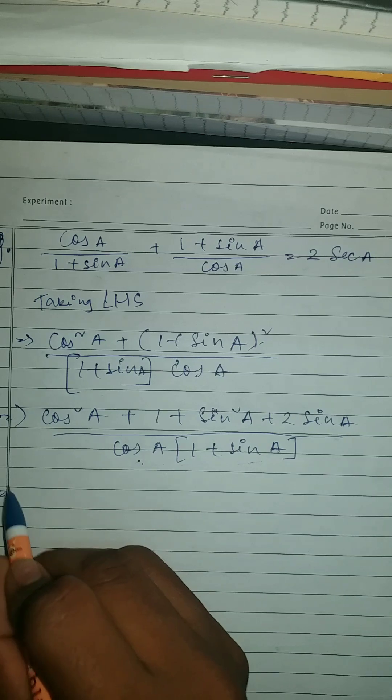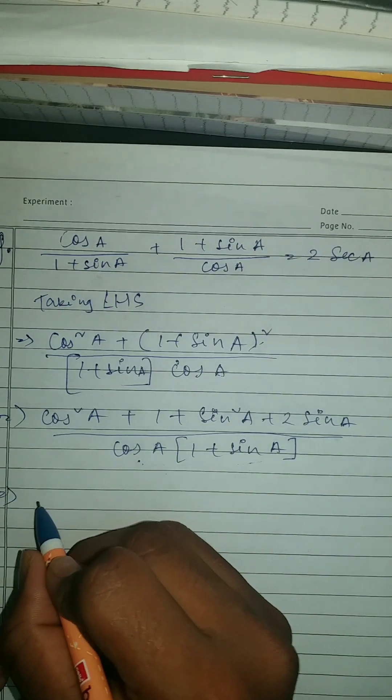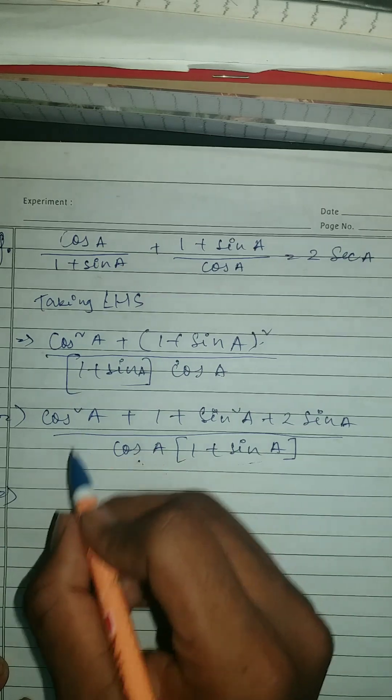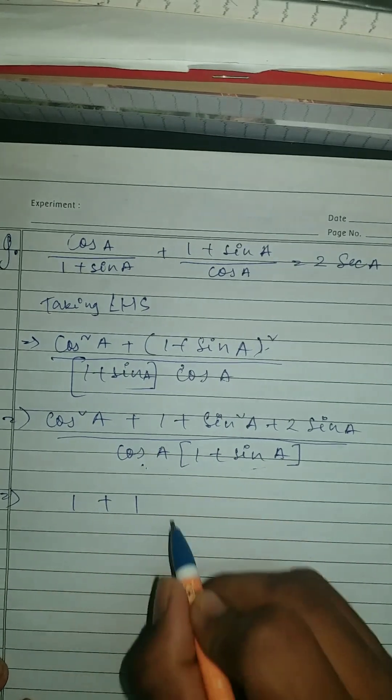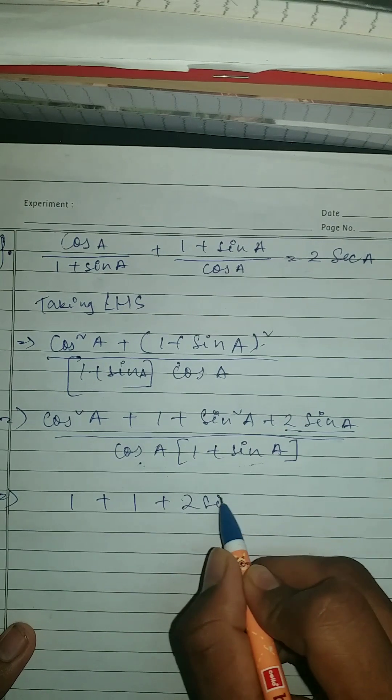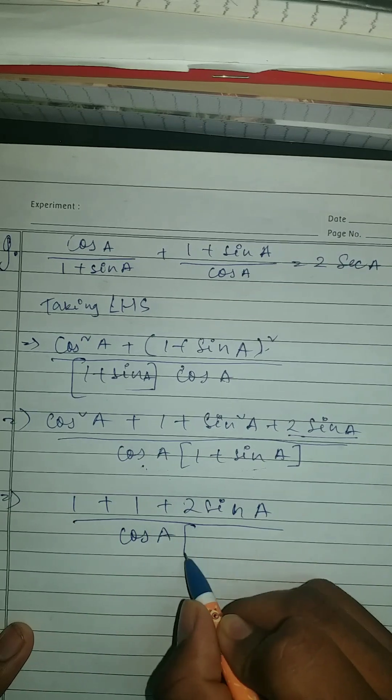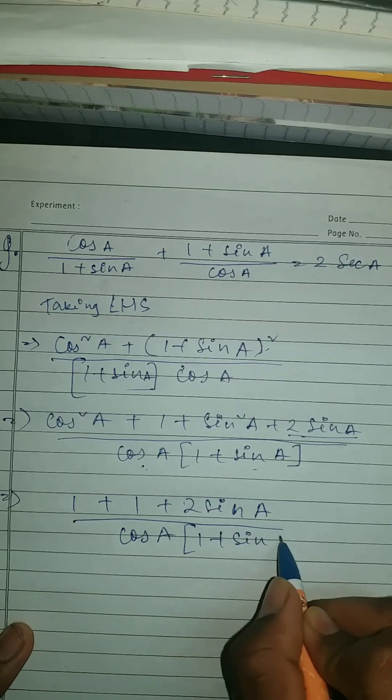Let's see how to do this. Here cos squared A plus sine squared A, which is 1 as you know, so it should be 1 plus 1, and this is mine. So plus 2 sine A upon cos A in bracket (1 plus sine A).